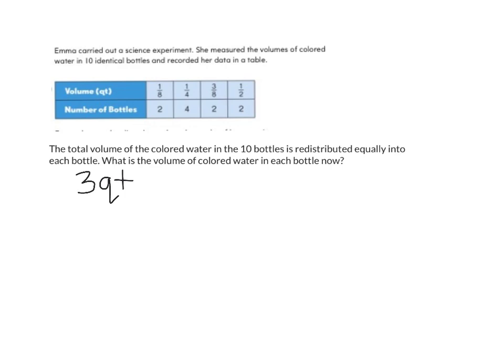We figured out that the total volume of colored water in the 10 bottles equals 3 quarts. For the next question: the total volume is redistributed equally into each bottle — what is the volume in each bottle now? We take our 3 quarts and divide by 10 bottles: 3 ÷ 10, which simplifies to 3/10 of a quart.